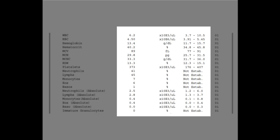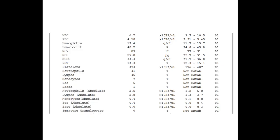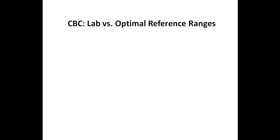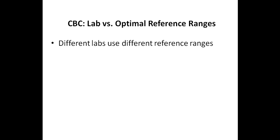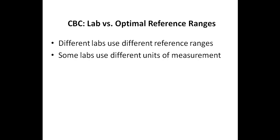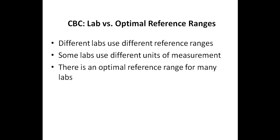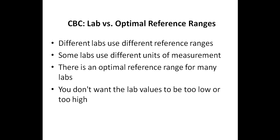Just a reminder that while you of course want to see all these values fall within the laboratory reference range, there is also a functional reference range, also known as the optimal reference range. You need to keep a few things in mind regarding the reference ranges. First, different labs use different reference ranges, and some labs also use different units of measurement. For example, for the 25-hydroxy vitamin D test, in the United States they typically use nanograms per milliliter, whereas in many other countries they use nanomoles per liter. Second, there is also an optimal range for each lab marker, and I'm going to list some of the optimal reference ranges during this presentation.